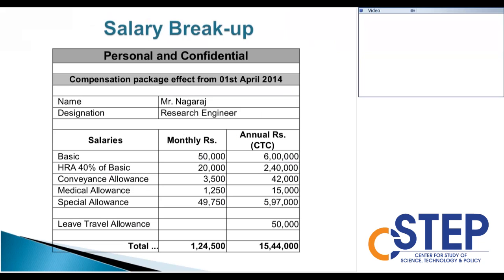We will go through the salary breakup. The compensation package includes monthly gross salary or annual CTC. For example, if anyone has an annual CTC of 15,44,000, excluding LTA, their monthly gross salary is 1,24,500. LTA or leave travel allowance will be paid at the end of the year, or the employee can claim the amount in between. The compensation package contains basic, HRA, conveyance allowance, medical allowance, special allowance, and leave travel allowance.